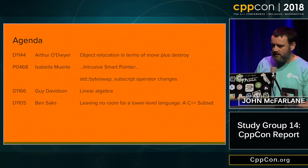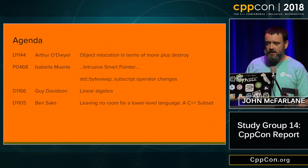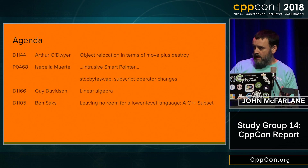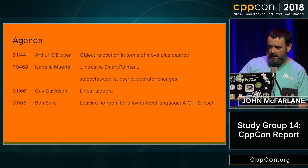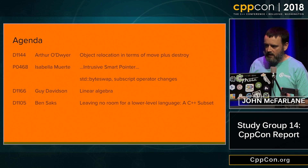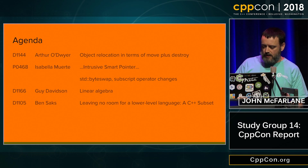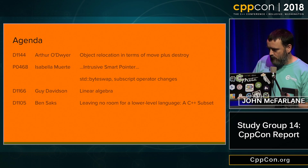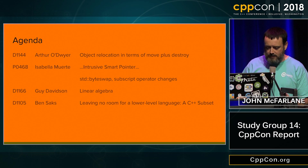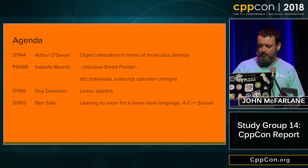Ben Sachs presented Ben Craig's paper on leaving no room for a lower level language. Basically, feature test macros could be used to figure out whether a particular implementation supports things like exceptions and RTTI and other things that are not available on all platforms. This went down well with the people in the room who spend a lot of time on SG-1, which is very promising. So it was a very productive day.